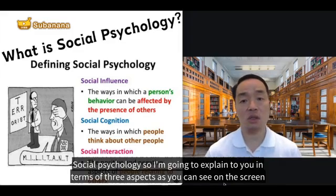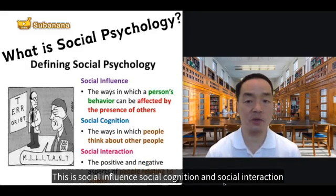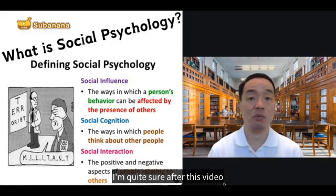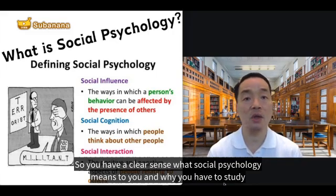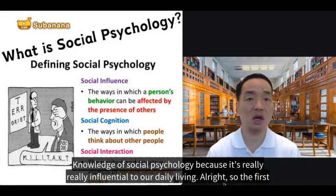So, social psychology. I'm going to explain it in terms of three aspects as you can see on the screen: social influence, social cognition, and social interaction. After this video, I'm quite sure you will have a clear sense of what social psychology means and why you need to understand at least some basic knowledge of it, because it is really influential to our daily living.